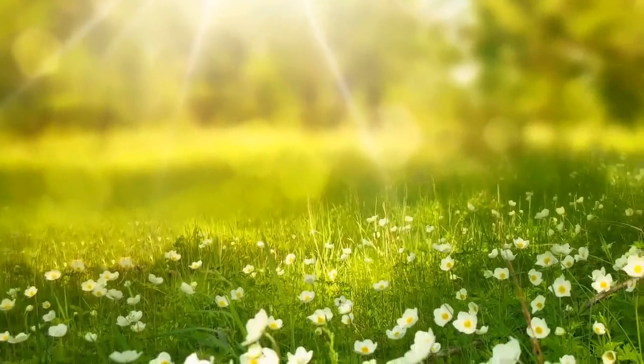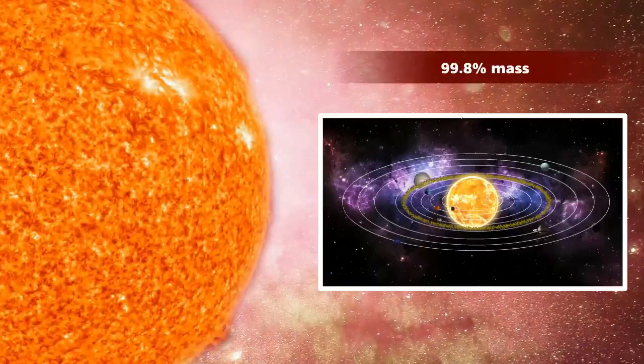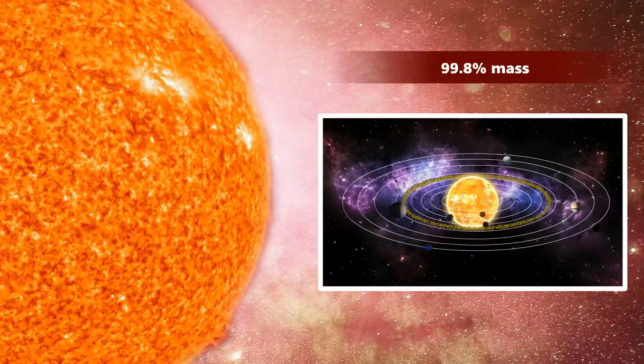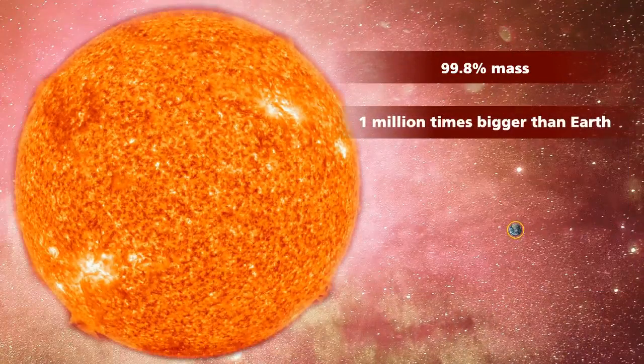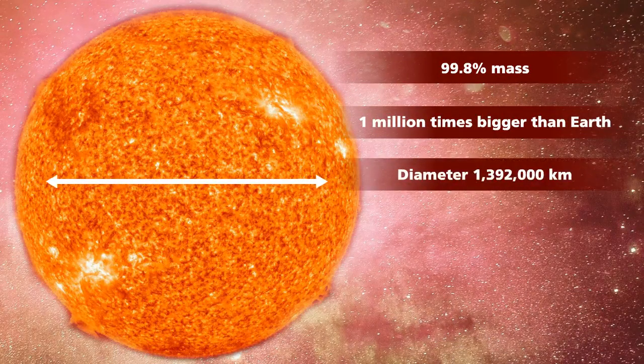It keeps our planet warm enough for living things to survive. The sun holds 99.8% of our solar system's mass, and is about one million times bigger than the earth. The sun has a diameter of about 1,392,000 kilometers.